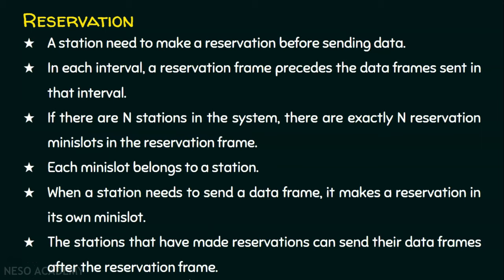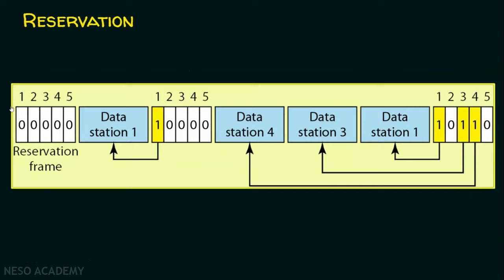Let's look at the diagram. There is a reservation frame with five mini slots — one, two, three, four, five — and each station has its own mini slot: mini slot one for station one, two for station two, three, four, and five respectively. Stations must make a reservation before they send data.